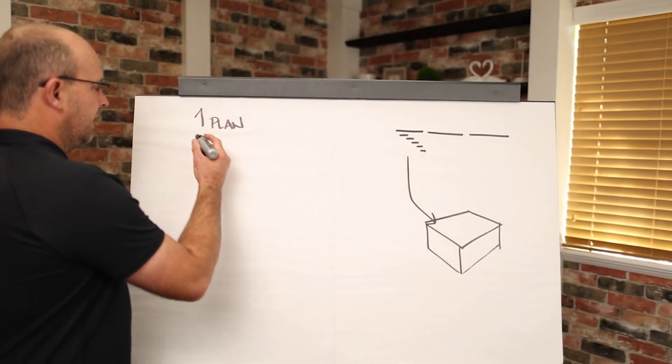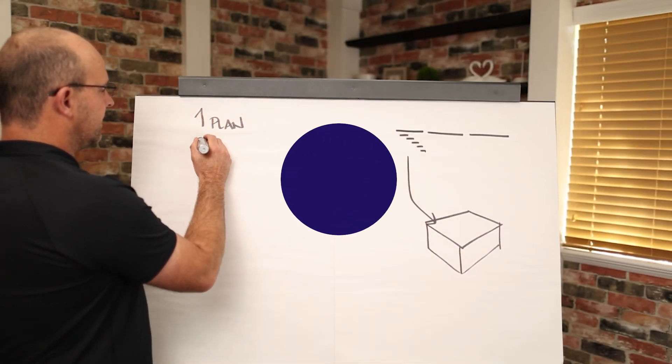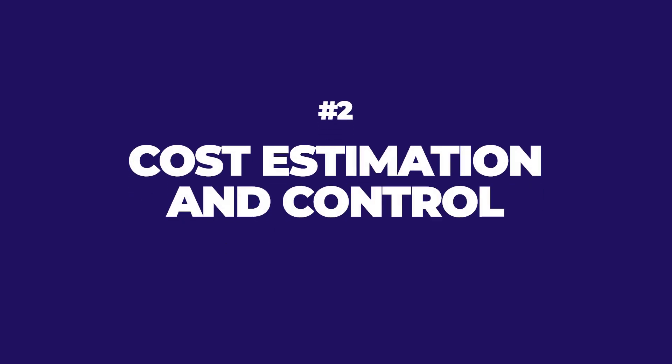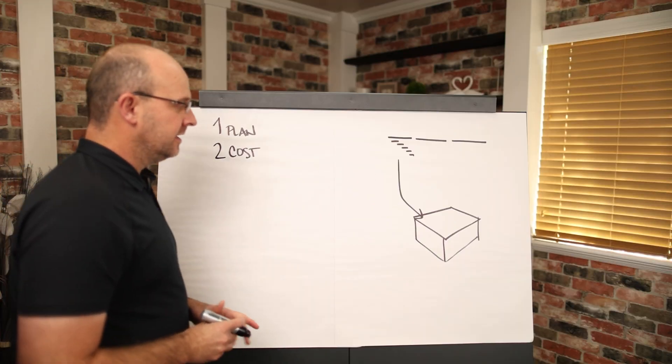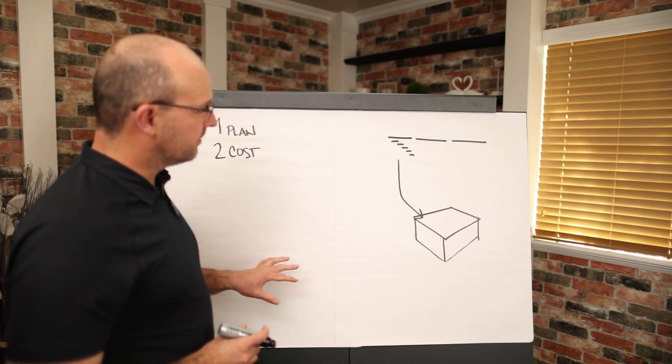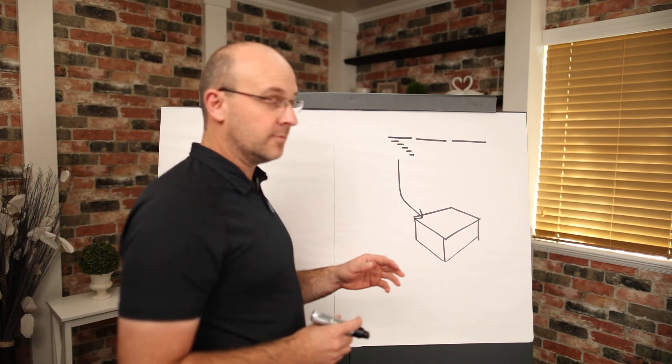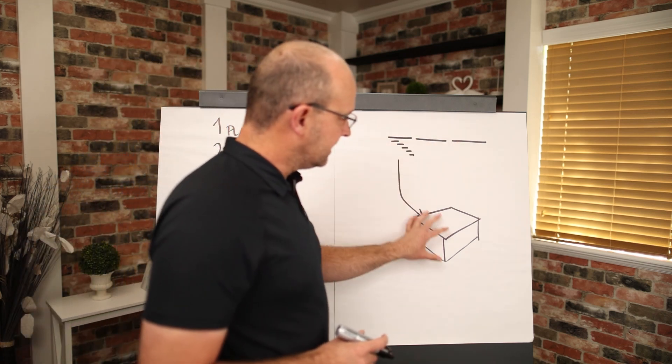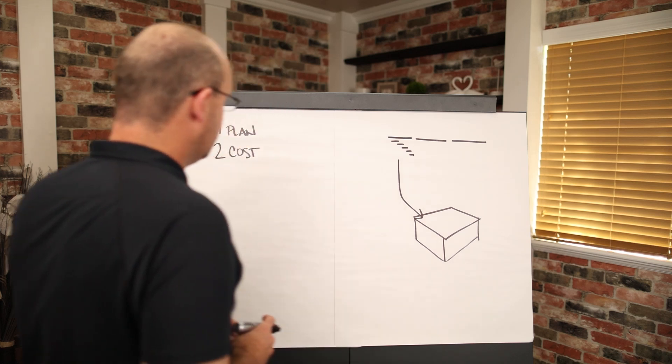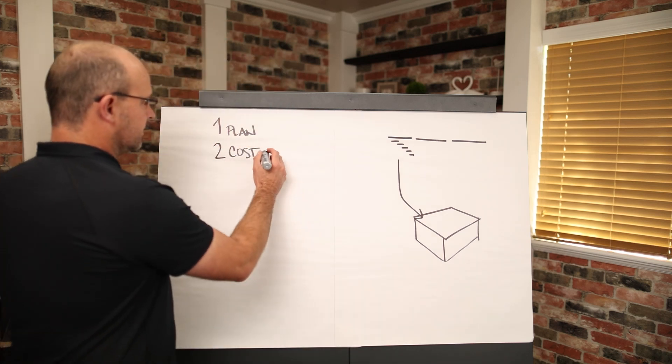Step number two is we need to do cost estimation and proper budgeting. So if you have a good plan and you've already done this and found the problems, and you know exactly how you're going to approach this plan, we need to know how much it's going to cost, right?